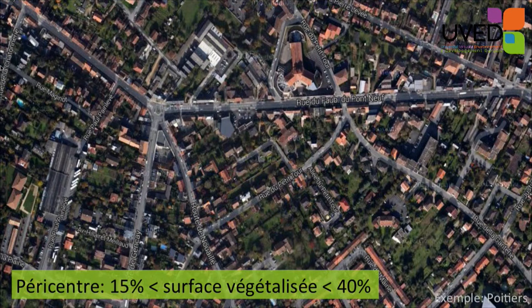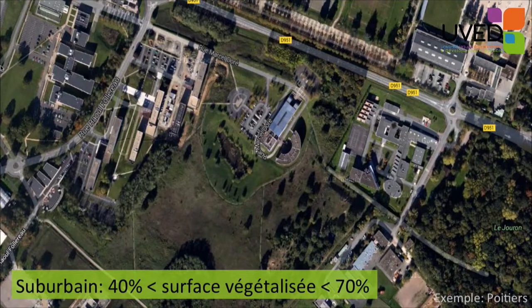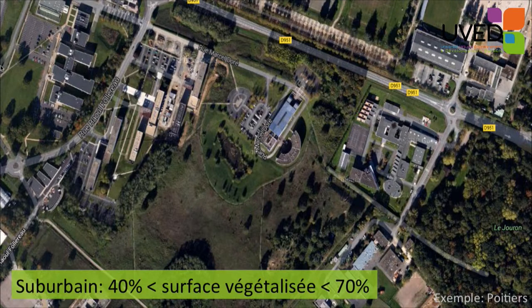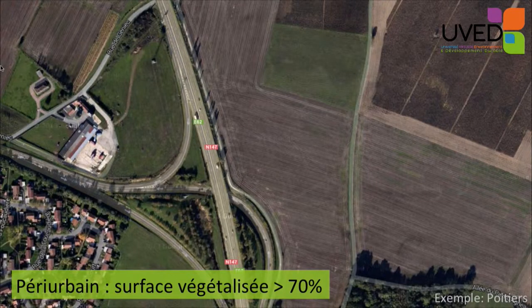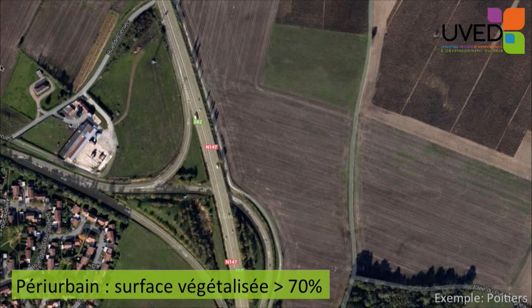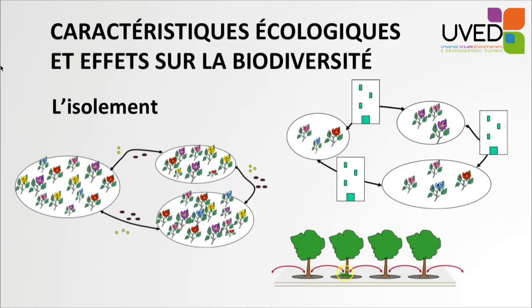Around the very central space, the vegetable coverage is between 15% and 40% — there are some gardens. In the suburban area, the green area is between 40% and 70%, with bigger green areas. And then, all around the town, the peri-urban area has more than 70% of green spaces, but is still influenced by the town.